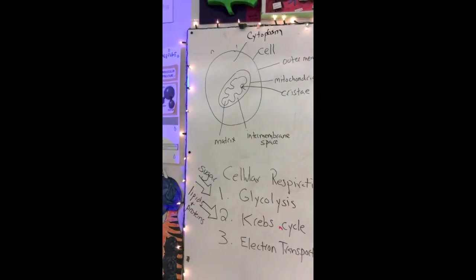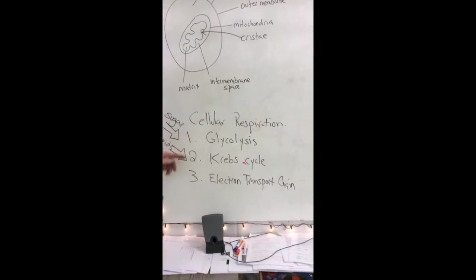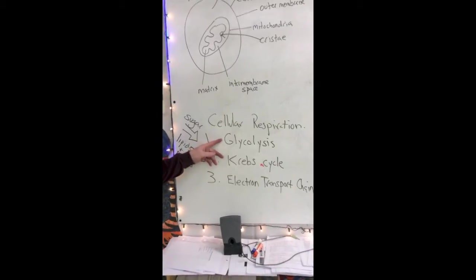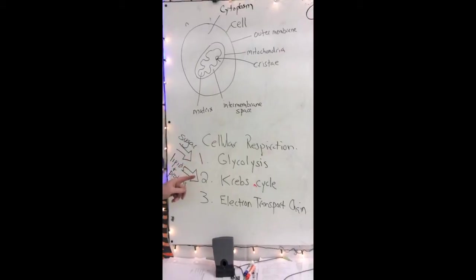The process of cellular respiration is divided into three steps. The first step is glycolysis. It takes place in the cytoplasm. It's very quick. It doesn't produce much ATP.